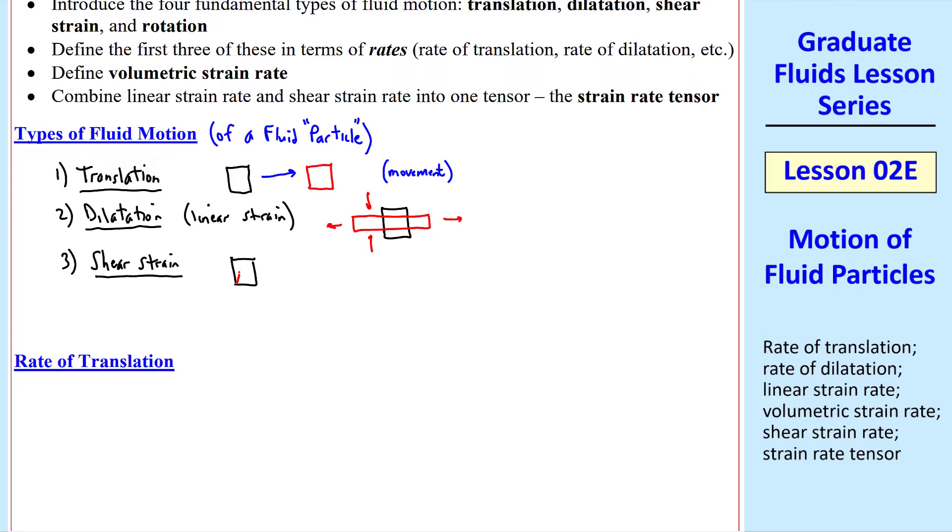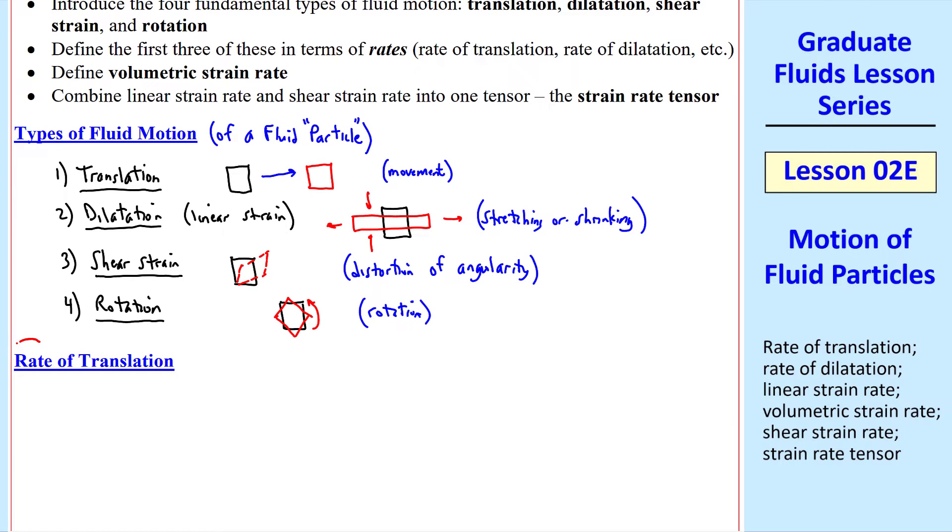Then there's shear strain, where the particle actually distorts with angles changing. So we would say that this one is distortion of angularity, whereas dilatation is stretching or shrinking. Notice the angles are all 90 degrees for both the original and the stretched particle, but here the angles have changed. The fourth one is rotation, where the particle has rotated.